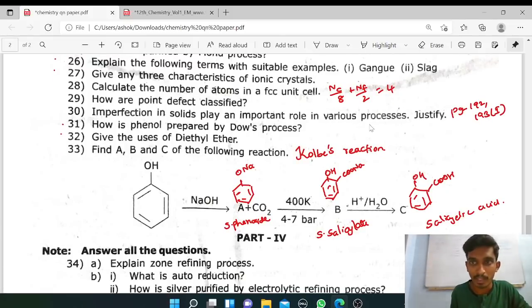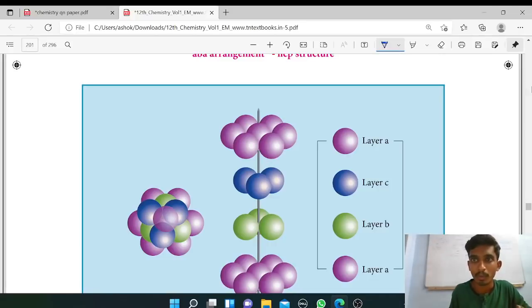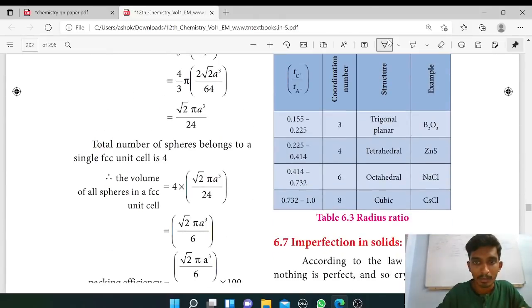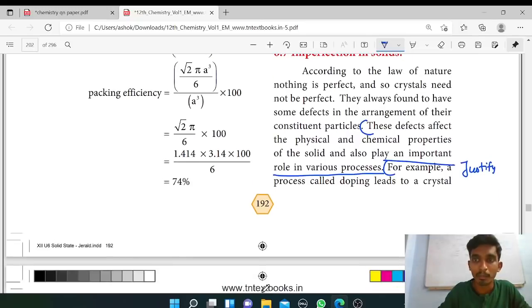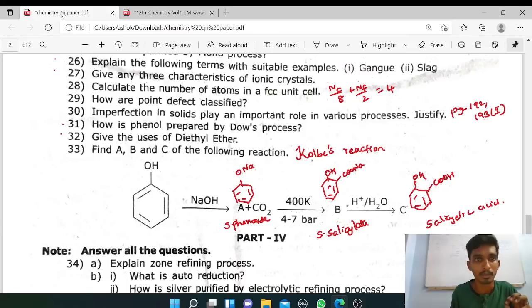Next question: imperfection in solids plays an important role in various processes, justify. This is a reasoning question. Answer is in the book. These defects affect the physical and chemical properties and play a major important role in various processes. That's the justification. Next, Dow's process.